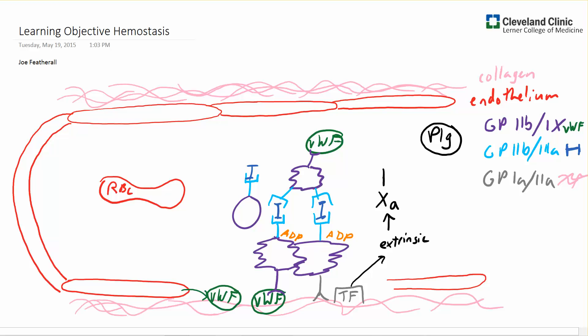Clotting factor 10 then cleaves prothrombin to create thrombin. And this is where the cascade becomes quite interesting. The traditional model was taught that there are sort of two pathways, the extrinsic and the intrinsic. And they're somewhat independent.